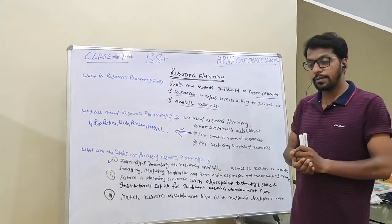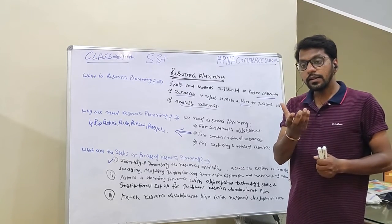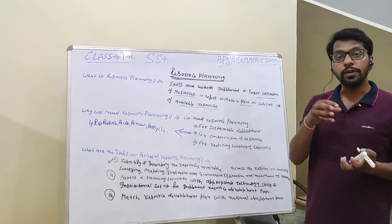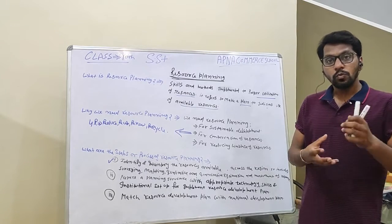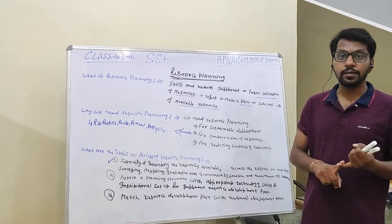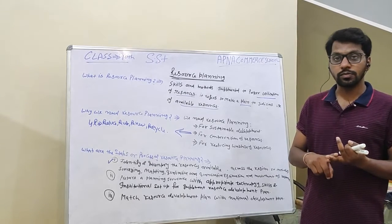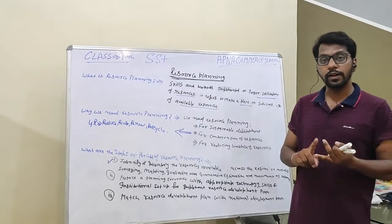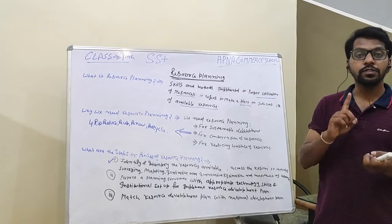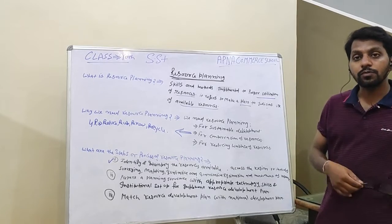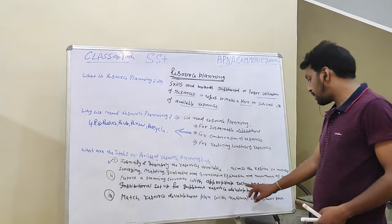The first step of resource planning is to identify and make an inventory of resources — that is, to stop and assess how to make inventory. We need to identify and map the quality of the resources. So, the first step of resource planning is: identify and inventory, which involves mapping, surveying, and quantitative and qualitative measurement of resources.